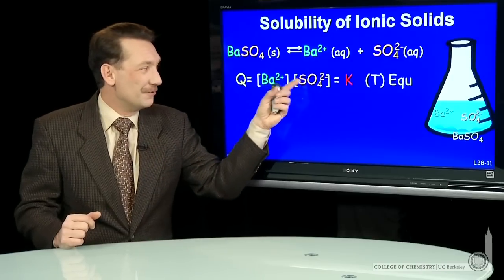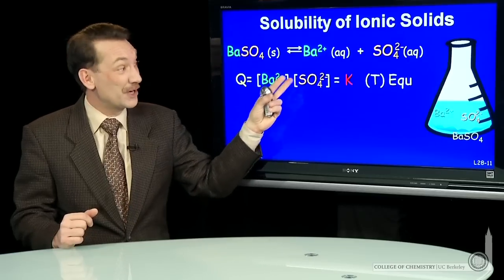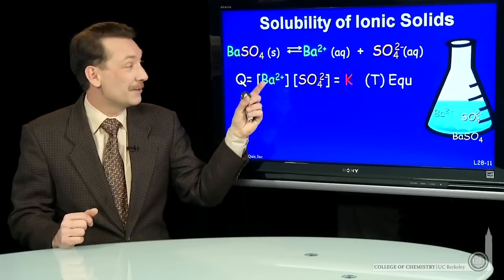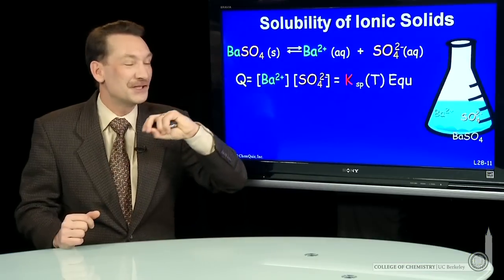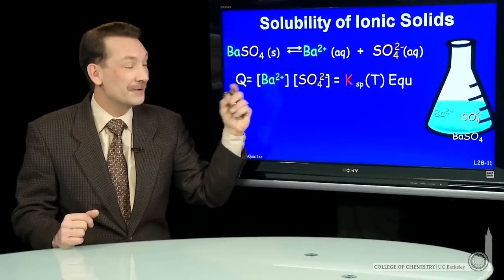So the reaction quotient is actually just a reaction product, the product of the two ions. In fact, we sometimes call these equilibrium constants solubility product, Ksp, because it's just the product of the two ions. It's still an equilibrium constant. It behaves exactly like an equilibrium constant. We just give it that designation to remind us we're talking about the product of the two ions in solution.